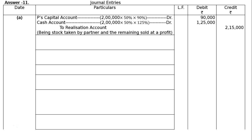P's capital account is debited with 50% of 2 lakhs at 90%, that is Rs.90,000, for the stock taken over by a partner. This is recorded on the credit side of the Realization account. The remaining stock — 50% of 2 lakhs, i.e., Rs.1 lakh — was sold at 25% profit on cost, meaning 125% of cost, giving Rs.1,25,000. Realization account total: Rs.2,15,000, being stock taken by a partner and remaining sold at a profit.